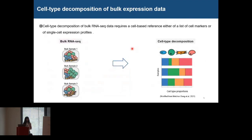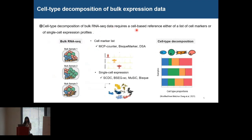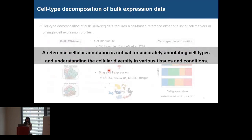In order to better utilize the bulk RNA-seq data, especially for those data with a lot of clinical data such as TCGA, we can infer the cell type composition from the bulk RNA-seq data. These algorithms require a cell-based reference, either a list of cell markers or single-cell expression profiles. Therefore, a reference cellular annotation is very important for us to accurately annotate cell types and understand cellular diversity in various conditions and tissues.